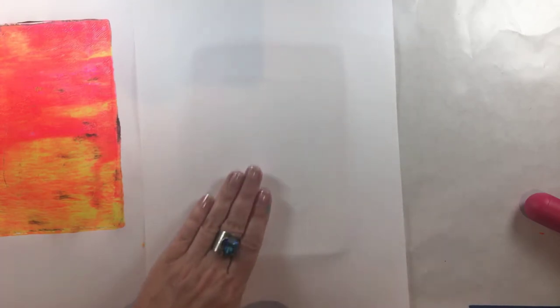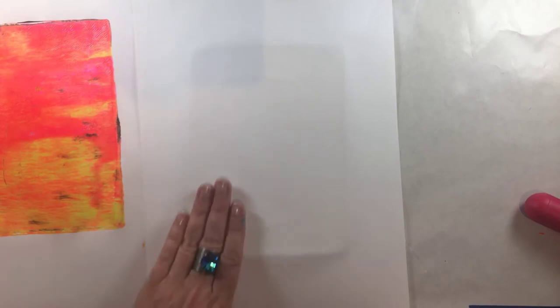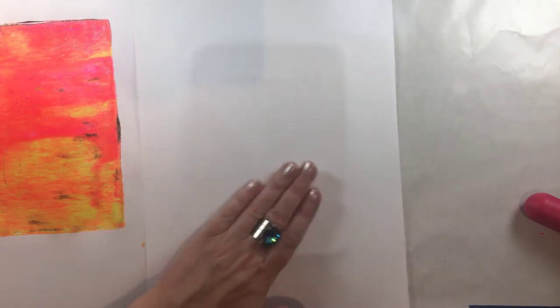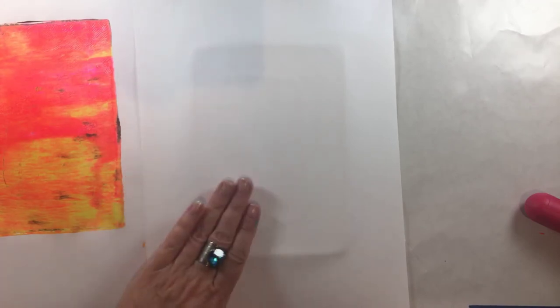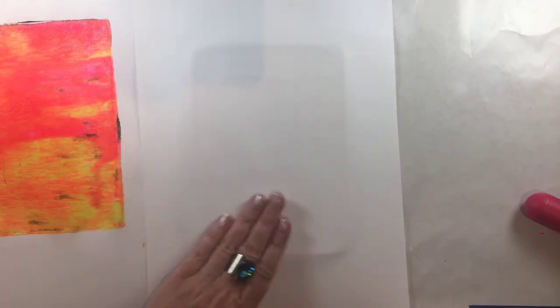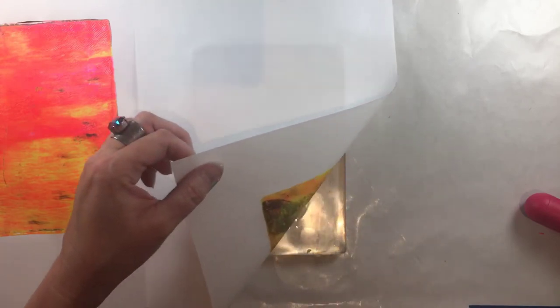But you always get many opportunities to fix a mistake in gel printing, so just make sure that you are rubbing it and getting a good adhesion between the paper and the image that is underneath.